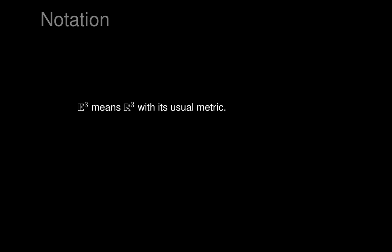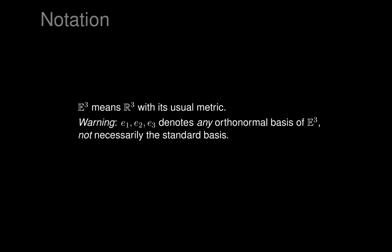In these lectures, E3 means R3 — a space parameterized by three variables with its usual Euclidean or Pythagorean metric. We also want to be careful with notation. The symbols E1, E2, and E3 will be used to denote any orthonormal basis of Euclidean space, not necessarily the standard basis. In using this notation for any orthonormal basis, we're following Cartan, although it's certainly not standard use in mathematics.